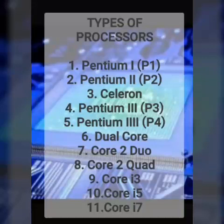The processor types include Pentium 1, Pentium 2, Celeron, Pentium 3, Pentium 4, Dual Core, Core 2 Duo, Core 2 Quad, Core i3, Core i5, and Core i7. These are all processors in series.